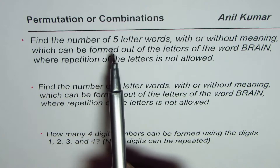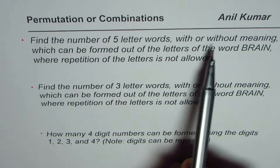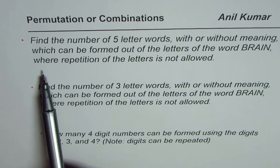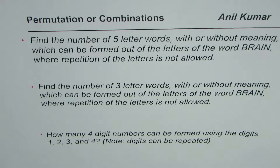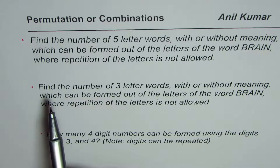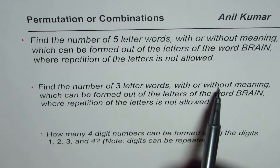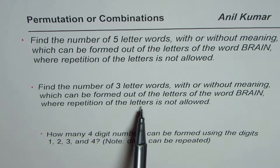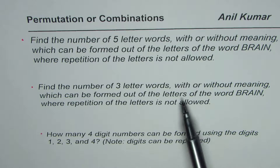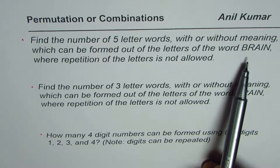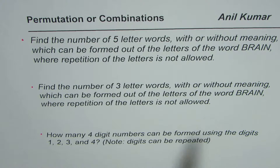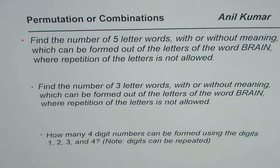The first one is: find the number of five-letter words with or without meaning which can be formed out of the letters of the word BRAIN where repetition of the letters is not allowed. Question two is: find the number of three-letter words with or without meaning which can be formed out of the letters of the word BRAIN where repetition is not allowed. The difference is that in the first question we take all five letters, and in the second we make a word with only three letters. In both cases, repetition is not allowed.